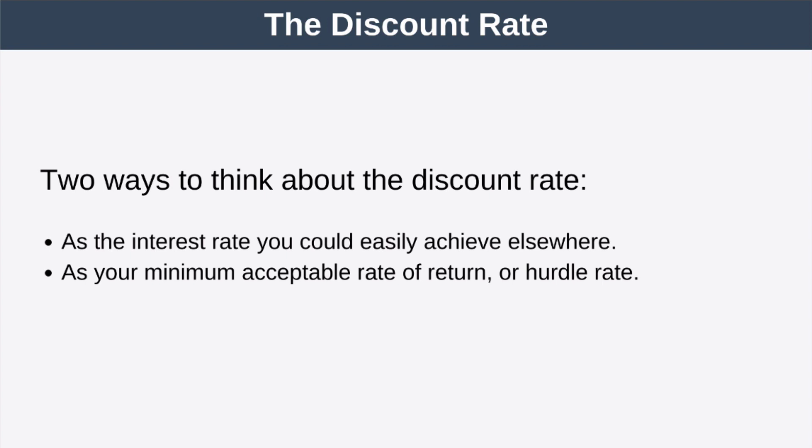Choosing a discount rate is a critical part of NPV, but it's also a bit of a black art and there's no right or wrong way to do it. Now there's a couple of ways you can think about the discount rate, and the first is as an interest rate that you could easily achieve if you invested your money elsewhere. So for example, if you can earn a 5% yield on 10-year treasury bonds, you might set your discount rate to be 5%.